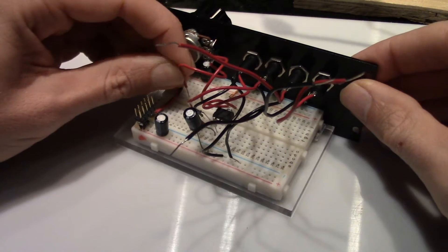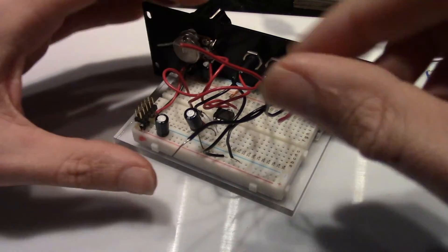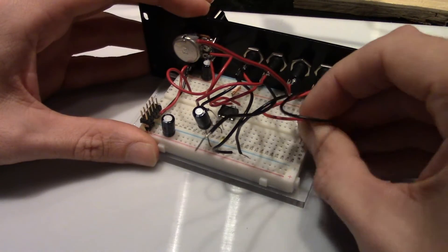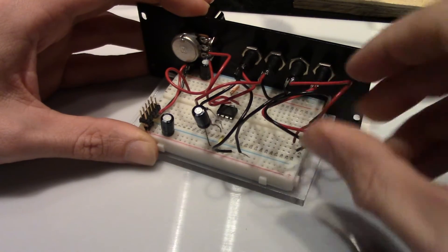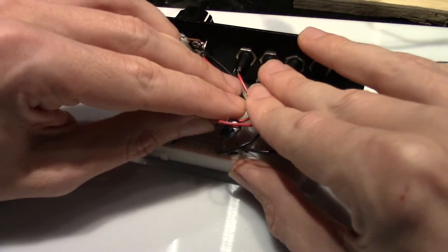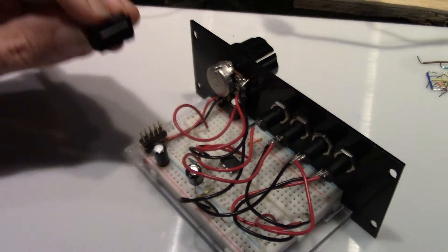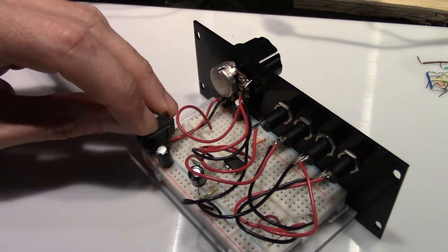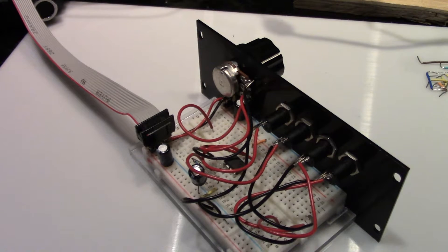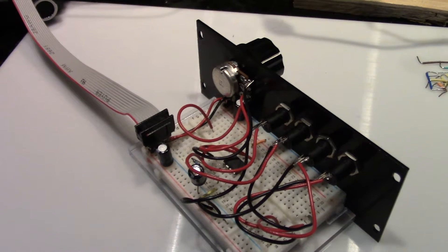Connect unused jacks to an empty bus and fold the wires flat. Now attach the power cable. Red stripe on the cable to the red paint on the breadboard. Initial testing with a current limiting power supply is recommended.